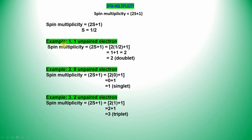Example 1: one unpaired electron in our system. Using the formula 2S plus 1, we write 2 times one-half, since we have only one unpaired electron. 2 times one-half equals 1, then 1 plus 1 equals 2. That means if your system has 1 unpaired electron, you need to write spin multiplicity 2 in your Gaussian calculation. That is a doublet.